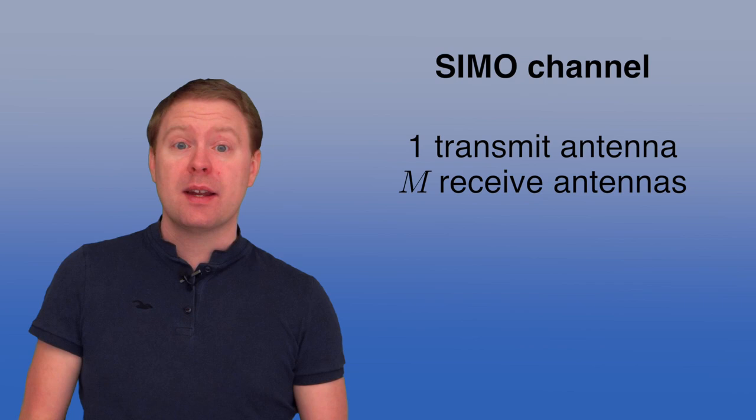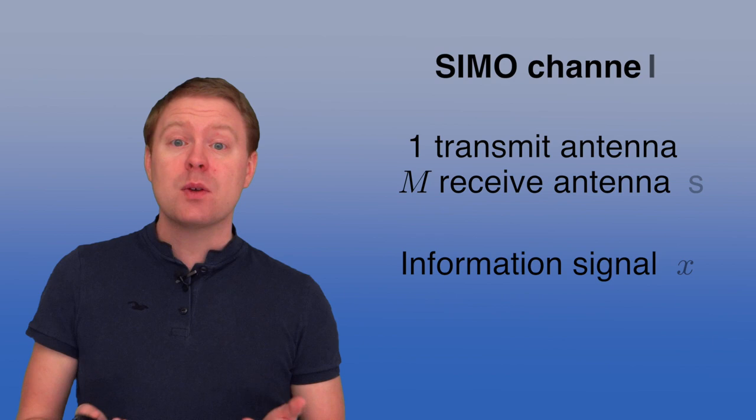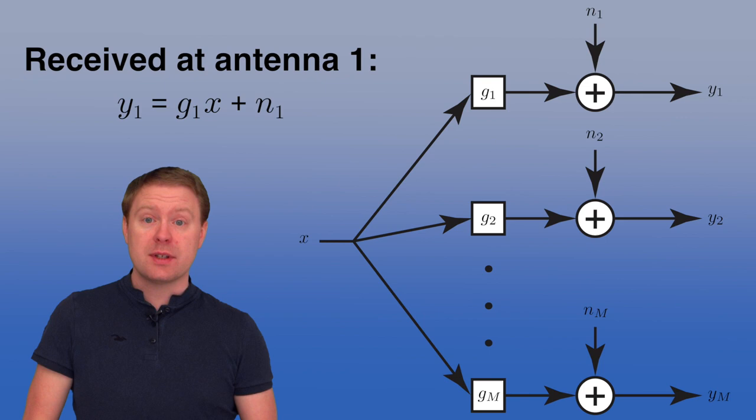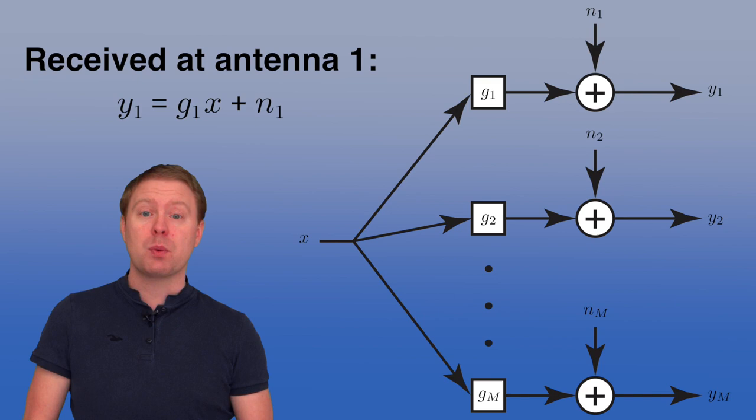We will now look closely at the SIMO channel with one transmit antenna and M receive antennas. The transmit antenna sends a signal X that propagates to each of the M antennas at the receiver, in the same way as if there were only one antenna. Y1, the received signal at the first antenna, is going to be X multiplied with the channel response G1, where the subscript signifies which antenna it corresponds to.